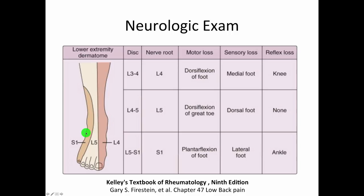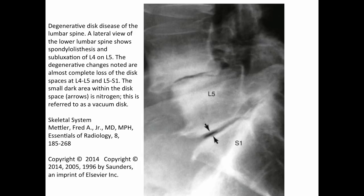For our 65-year-old patient, an X-ray shows degenerative changes. The disc spaces at the lower lumbar levels are narrowed, there is bone spurring with osteophyte formation along the vertebral edges, and L4 is actually slipped forward on L5 — a spondylolisthesis. Many degenerative changes are noted in this particular X-ray.